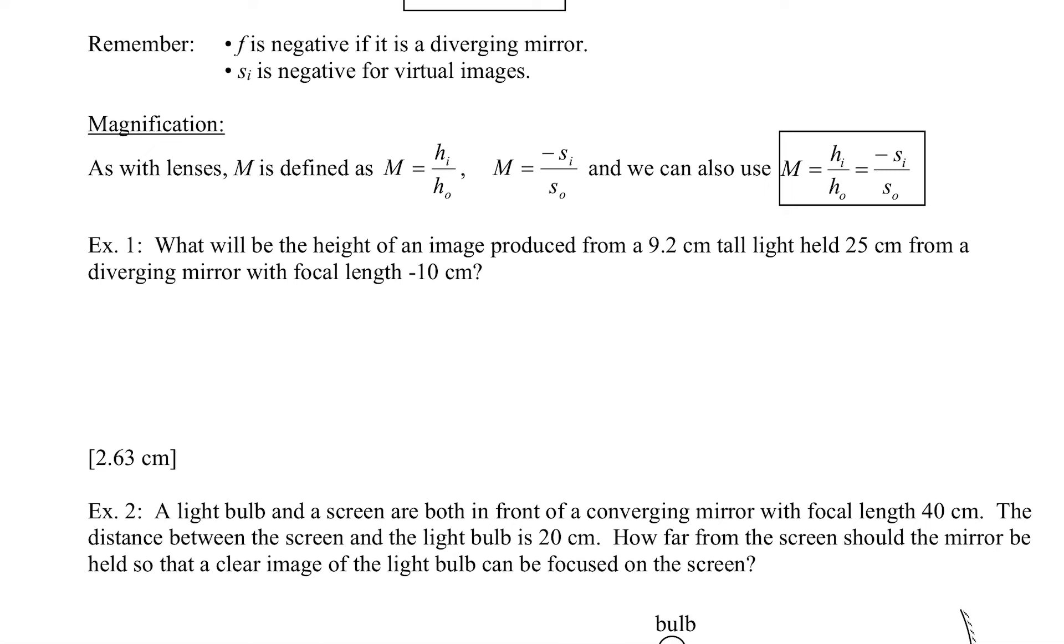What will be the height of an image produced from a 9.2 cm tall light, held 25 cm from a diverging mirror with a focal length of negative 10 cm? So what will be the height of the image? So HI is the question. 9.2 cm tall light, so that's HO equals 9.2 cm. It's going to be held 25 cm from the mirror. So the distance of the object, that's SO, equals 25 cm. And F equals negative 10 cm.